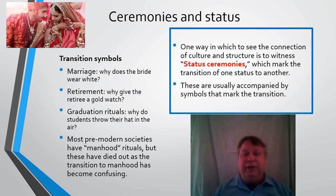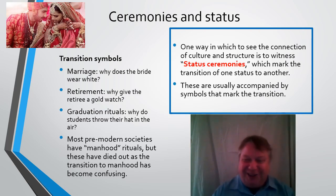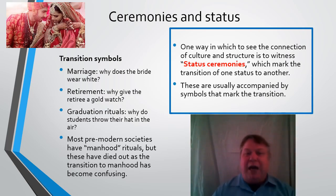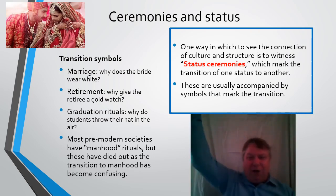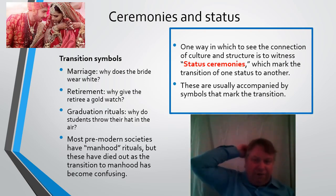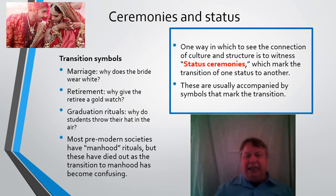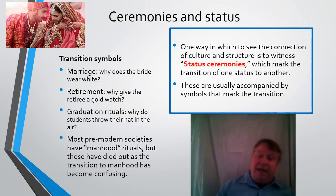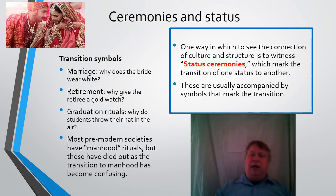Retirement — why do we give a retired person a gold watch? He doesn't have to show up to work anymore, so why does he need a watch? It's a symbol that now he's got nothing but time. Graduation rituals — when we graduate, we throw our hat in the air; maybe this is a symbol of liberation, throwing away the symbol of our student status. Most pre-modern societies have specific growing-up rituals for both women and men. In some cultures women still have a quinceañera or sweet sixteen birthday — these are semblances of previous rituals.